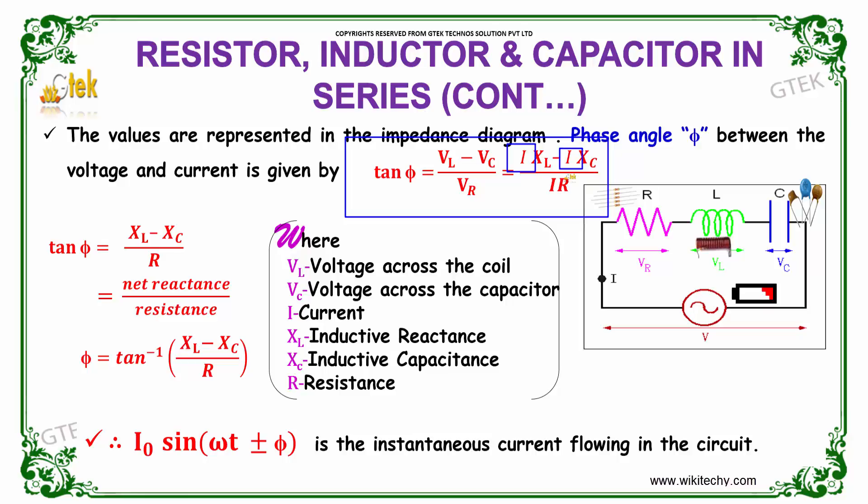That's I into XL minus I into XC divided by IR. I gets cancelled. We get tan phi equals XL minus XC divided by R, that is the net reactance divided by resistance. So phi equals tan inverse of XL minus XC divided by R.